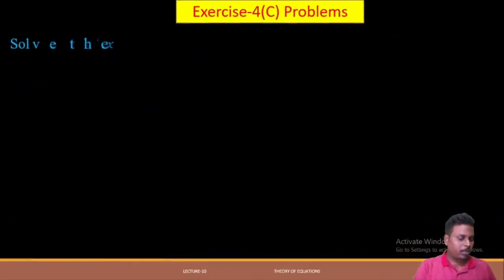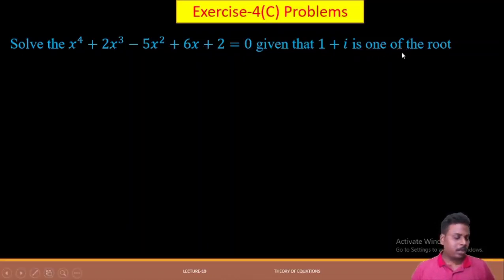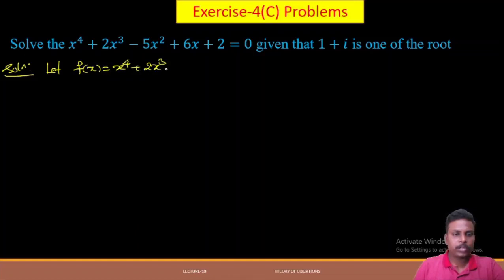Let us solve one more problem. Solve x⁴ + 2x³ − 5x² + 6x + 2 = 0 given that 1+i is one of the roots. Let f(x) = x⁴ + 2x³ − 5x² + 6x + 2.